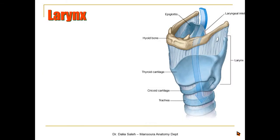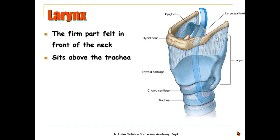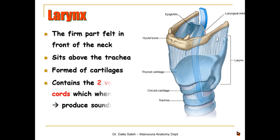Now we move to the lower respiratory tract, starting with the larynx. It is a firm structure felt at the front of the neck, sitting above the trachea. It is formed of cartilages and membranes and contains two vocal cords which, when they vibrate, produce sounds.